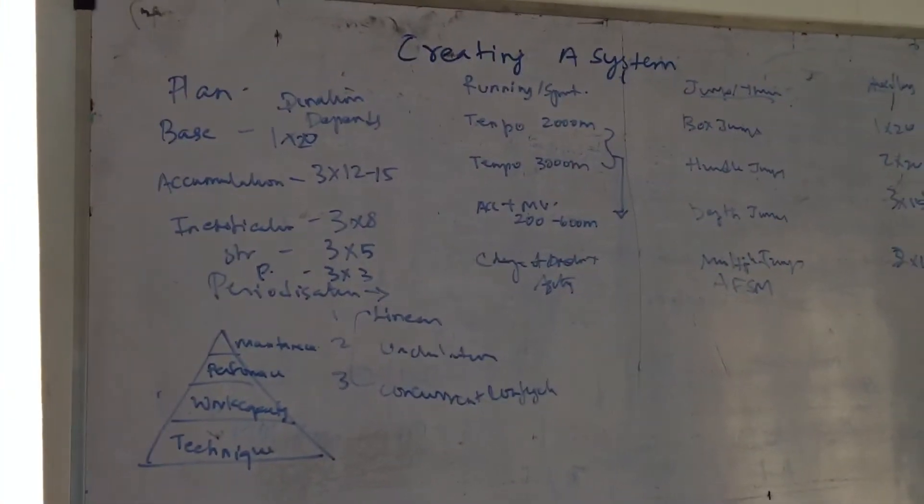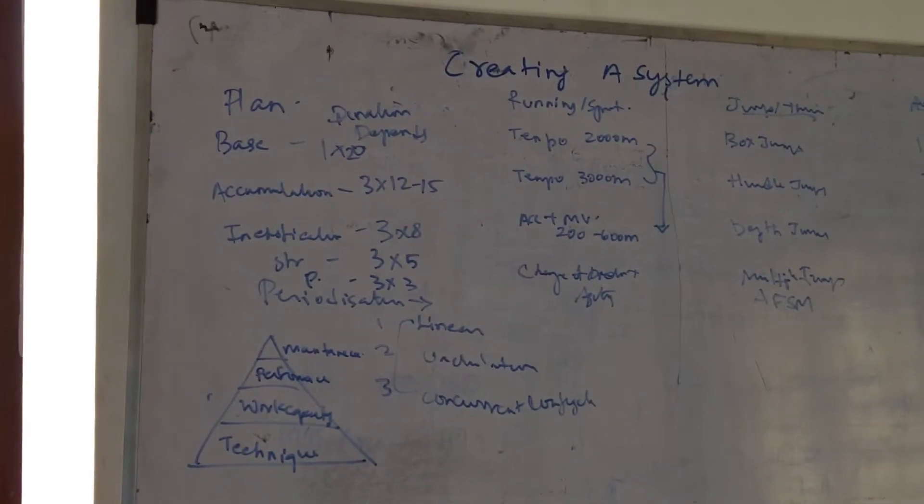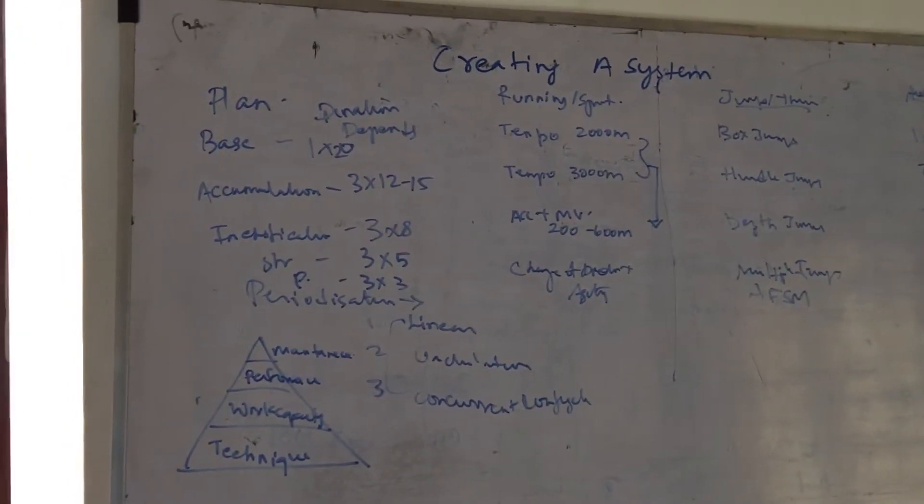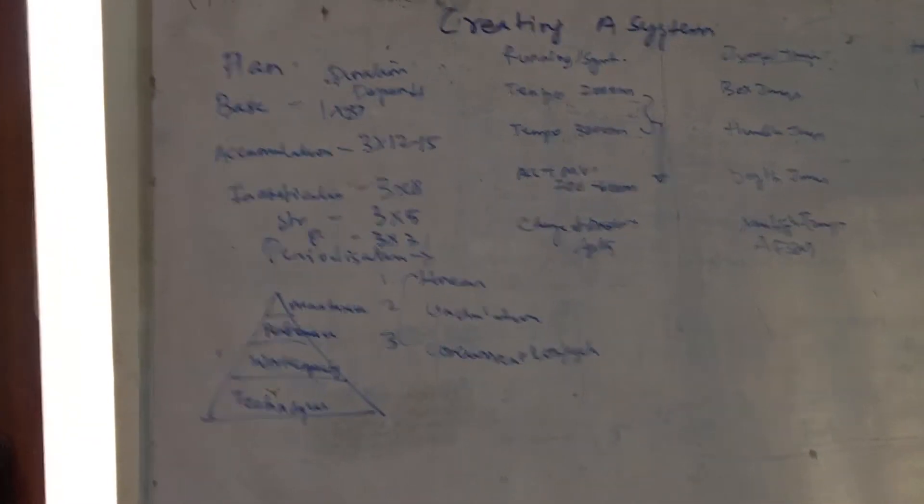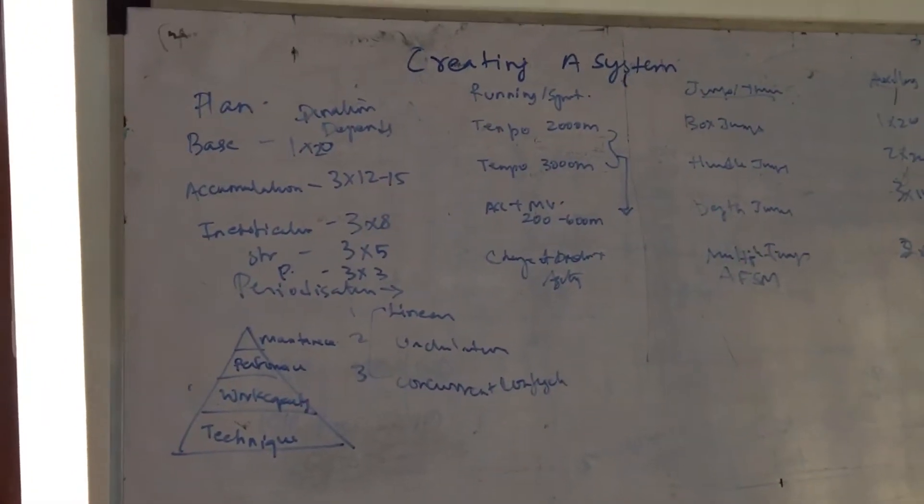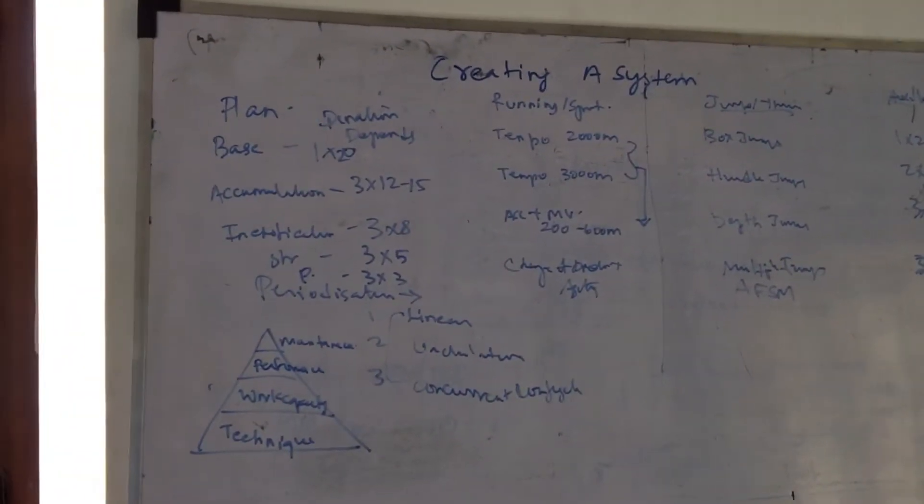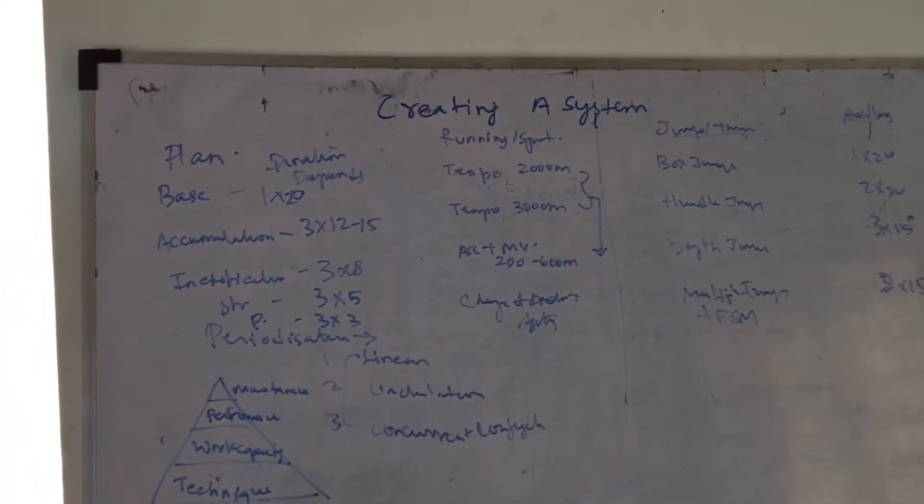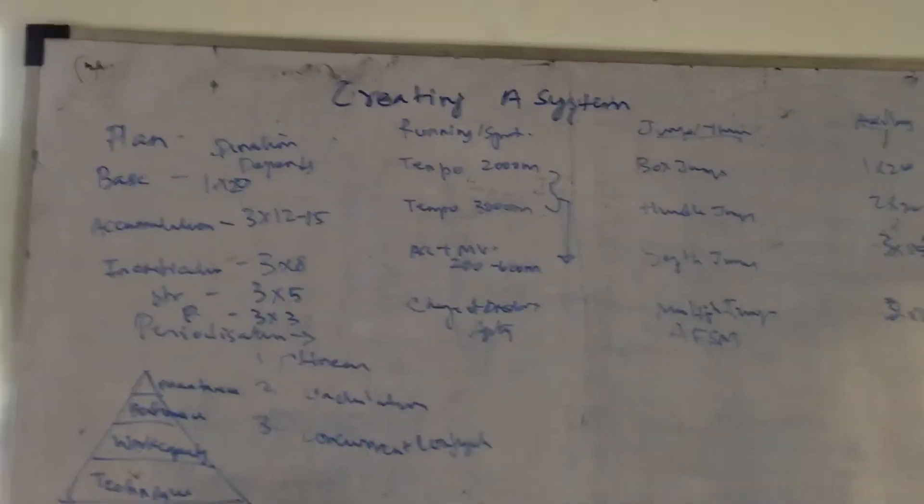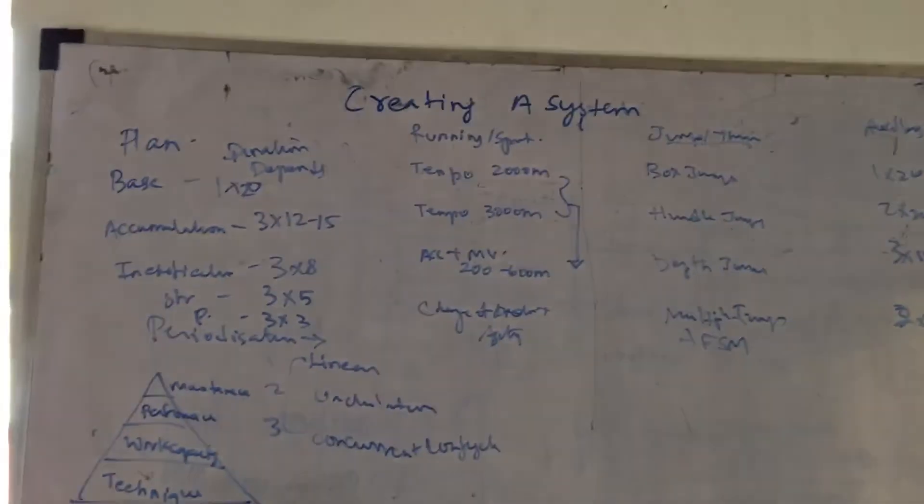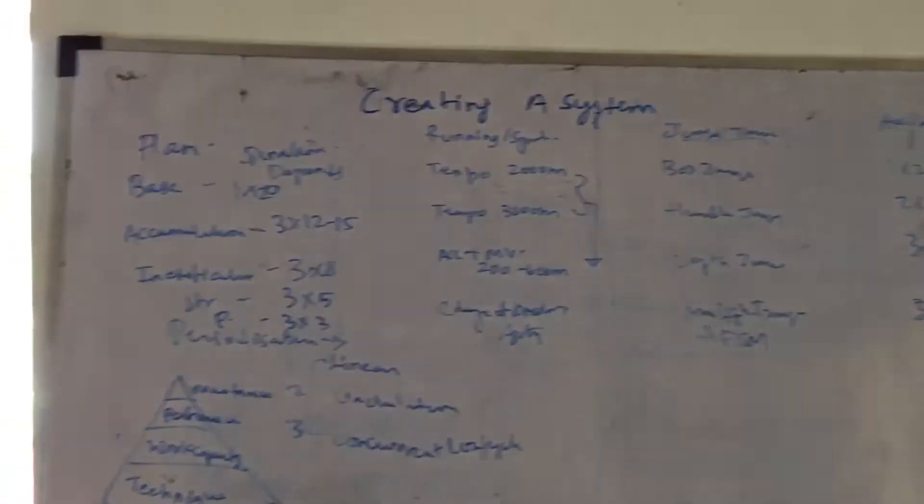So 1 set of 20, 4 times a week, which is 80. High repetition will improve technical efficiency. I always start with 1x20. Now you have to create a rep range or scheme based on your philosophy and coaching style. In the tempo work, I will build up to 2000 meter extensive tempo. The starting point depends on the individual. For a beginner, I'll start with 600 meters and work up to 2000.